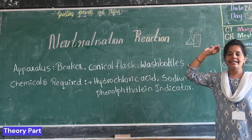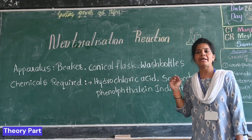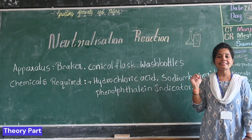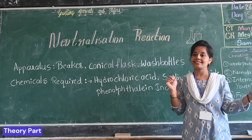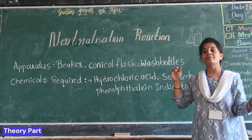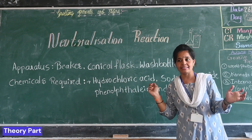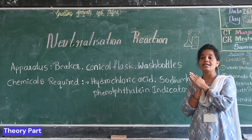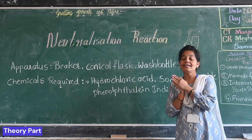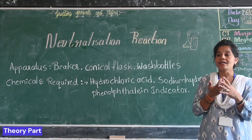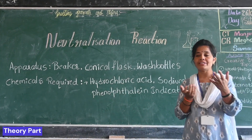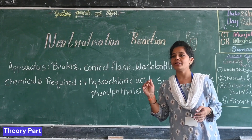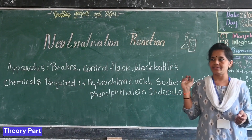In day-to-day life we use many substances. Among those substances, some are acidic and some are basic. Some of these substances are toxic. So how do we know whether a given substance is an acid or a base?